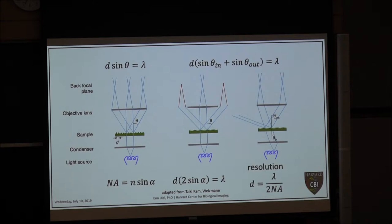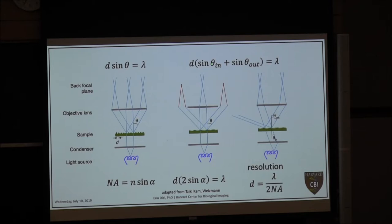When you align your microscope for Köhler illumination, it's important to have condenser and objective in the appropriate positions. The objective is usually easy because your sample needs to be in focus. But there are ways to verify whether your condenser is in the right position — there are great YouTube videos on this, and you can stop by the facility to discuss it. Also, for the factor-of-2 resolution improvement to hold, the NA of your condenser and your objective need to match — or you pick whichever NA is lower.